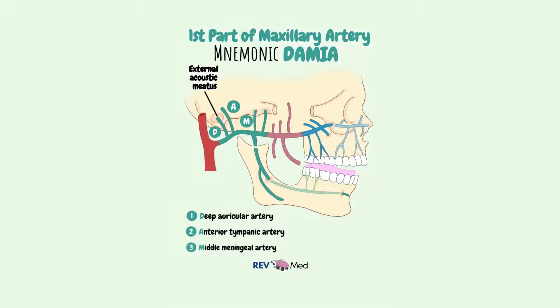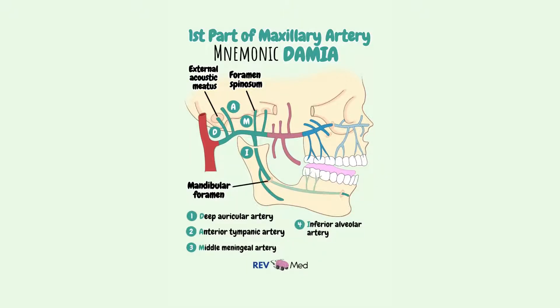M is for the middle meningeal, which enters the spinous foramen. I is for the inferior alveolar, which enters the mandibular foramen. And finally, A is for the accessory meningeal artery, which enters the foramen ovale.